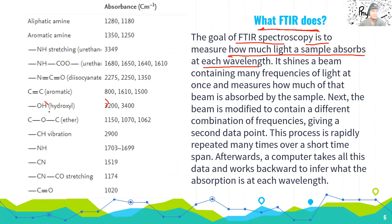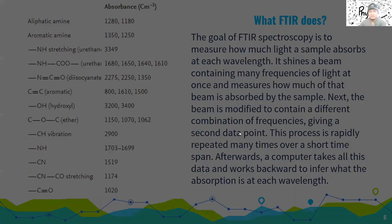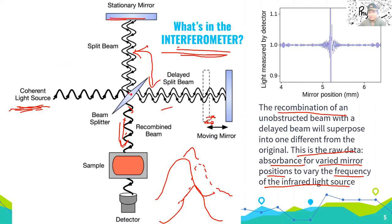These activities — such as stretching — correspond to absorbance at certain levels, measured in wavenumbers (inverse centimeters). What FTIR does is shine a coherent light beam containing many frequencies, which can be varied at once through the interferometer. The beam is then modified to contain a different combination of frequencies for each data point. Per mirror position, data points are collected, and actual values are recorded to create a function.